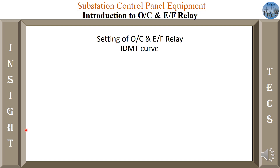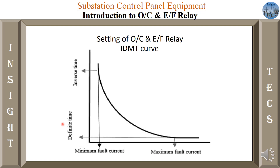Now for settings of over current and earth fault relay — a very interesting topic. To understand the settings we first have to understand what is the IDMT curve. IDMT basically means Inverse Definite Minimum Time curve, which is used for doing the settings of this relay. On the x-axis there is current and on the y-axis there is time. When the current is less, the time taken by the relay to operate or send the trip command is more. As the current increases, the time taken by the relay to operate is minimum — as the name suggests, inverse definite time.